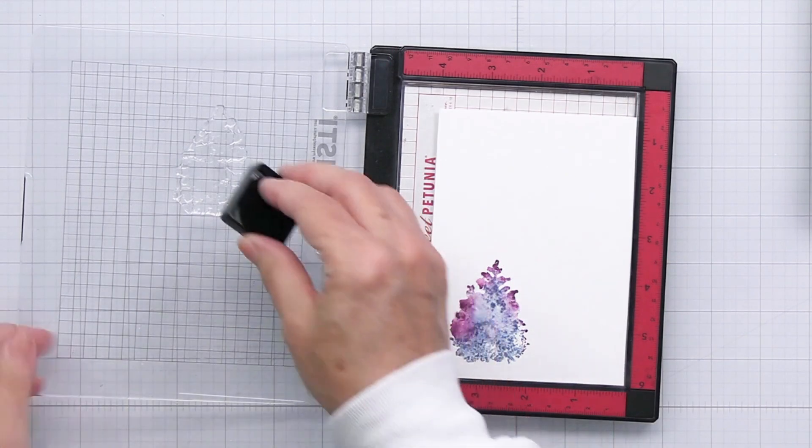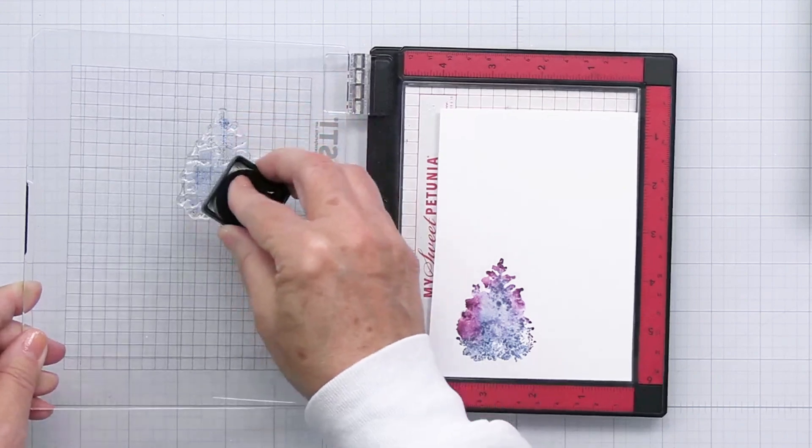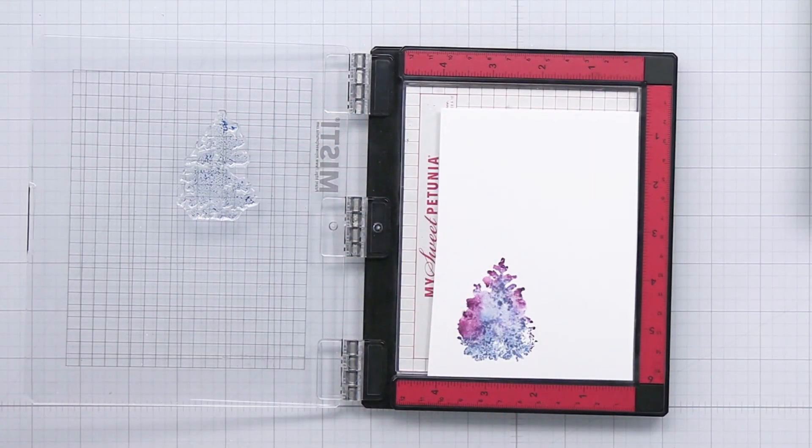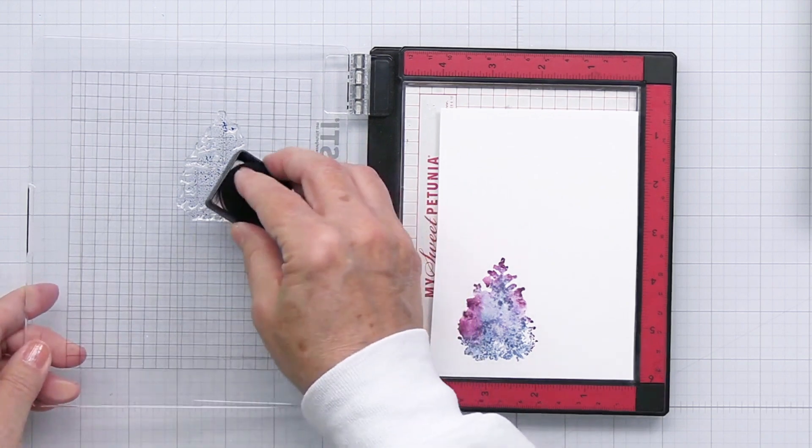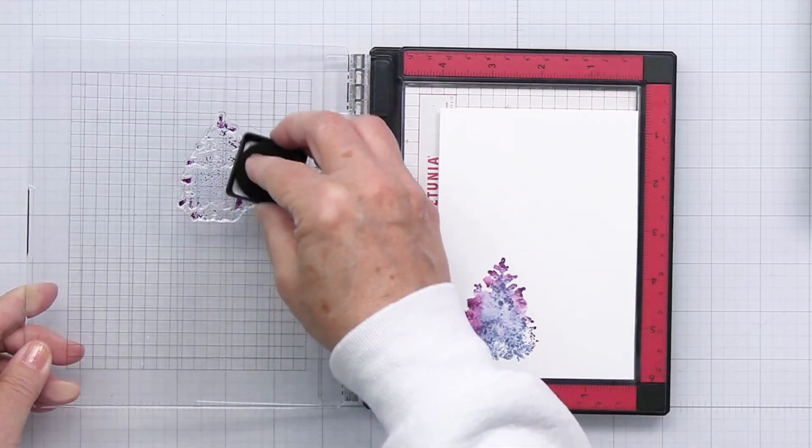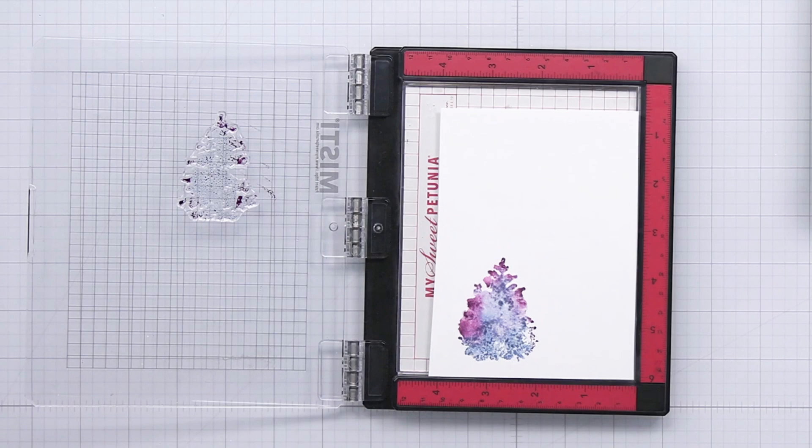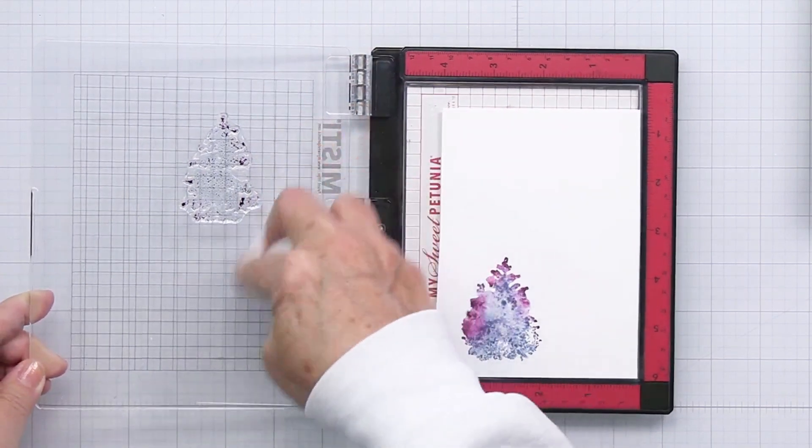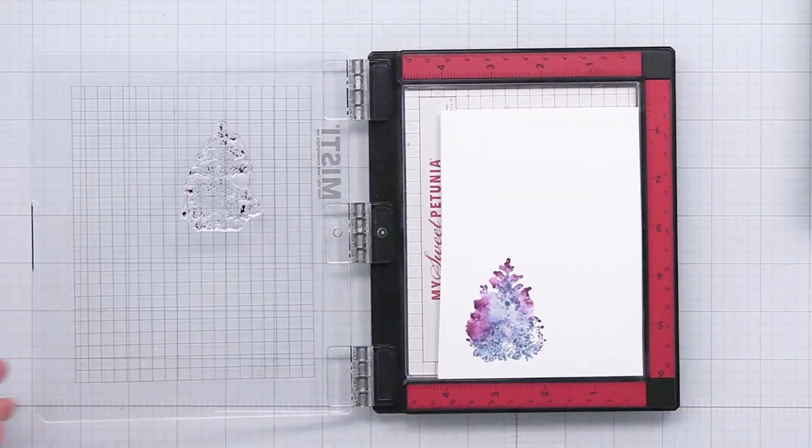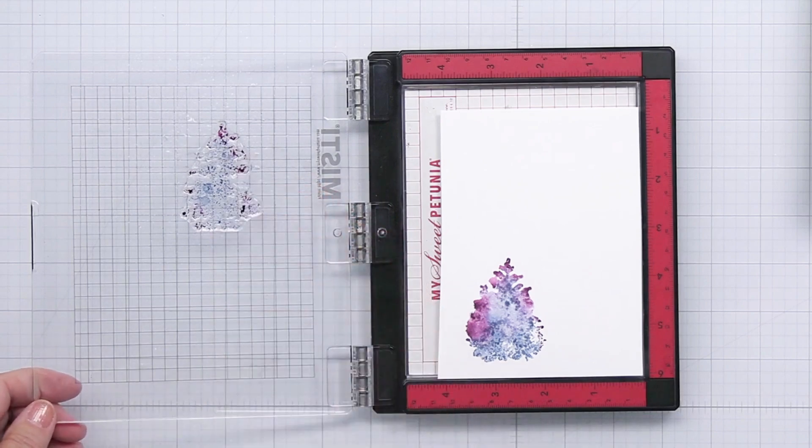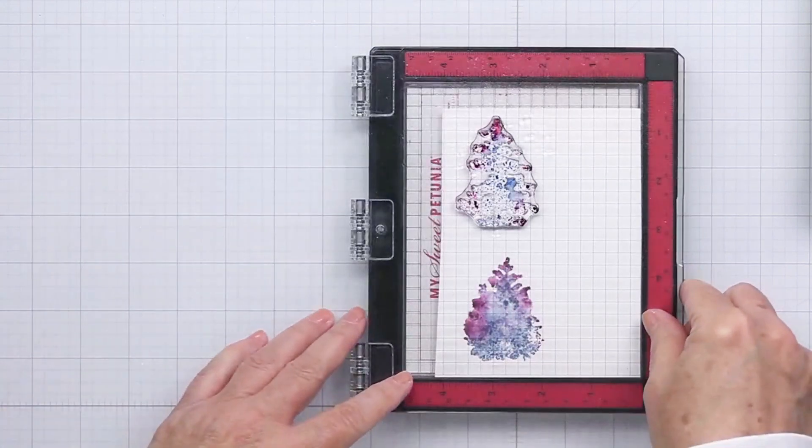I'm going to do that exact same technique with four of the stamps from the watercolor pine set. Same thing, going in with that Stormy Sky Distress Ink Cube. I do really like the cubes for this technique because they allow you to get into smaller areas, so when I'm adding ink to the edges it's really easy with the ink cube. You can definitely do this with the larger pads as well, but I do really like the ink cubes for this technique for sure.